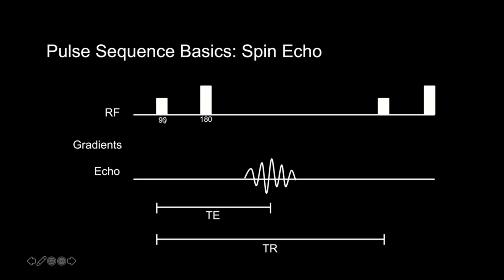Over time after this 90-degree RF pulse, there's going to be longitudinal relaxation back towards the z-axis and transverse relaxation, or T2 relaxation. Also remember that there is transverse decay due to magnetic field inhomogeneities — what we introduced as T2 star. Nuclei experiencing a lower magnetic field precess slower, get out of phase, and lose signal in the transverse plane. After all of that relaxation, we then apply a 180-degree pulse — also called a rephasing or refocusing pulse — which occurs halfway between the 90-degree pulse and the echo, at one half of TE.